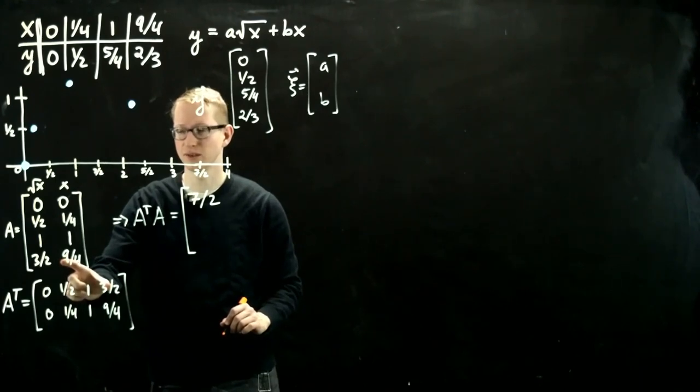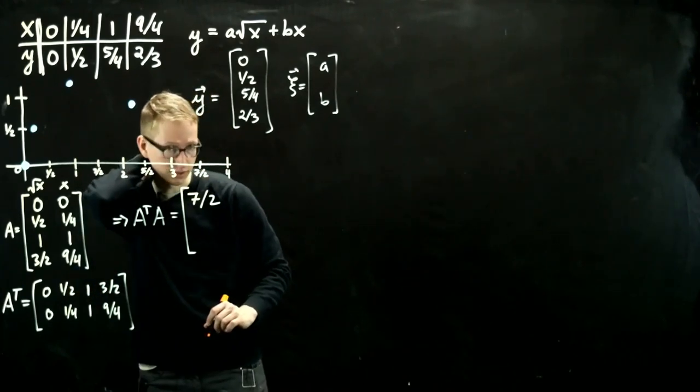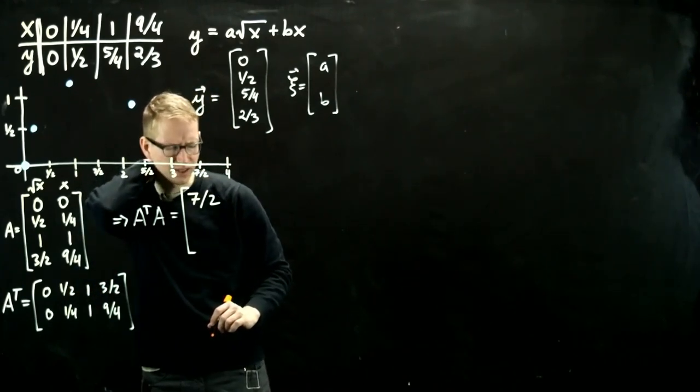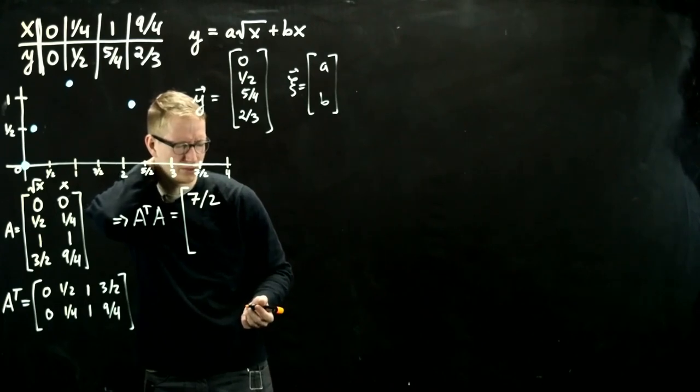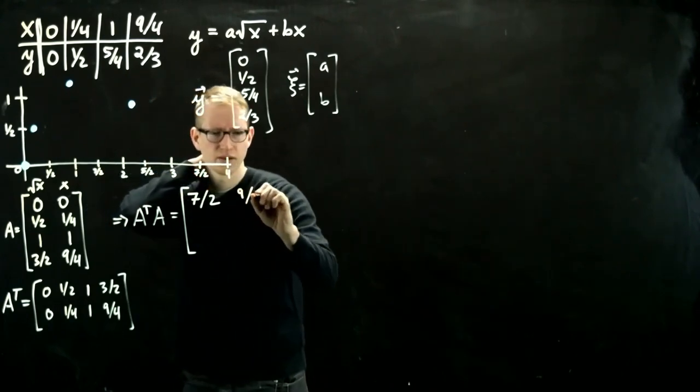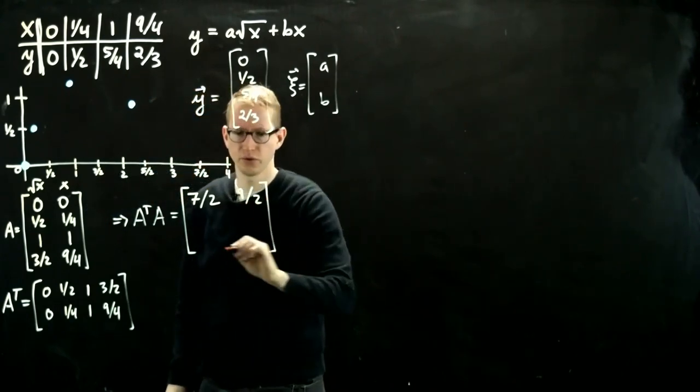So 27 eighths plus 9 eighths gives us 36 eighths. And if we divide that by 4, I think we get 9 halves, the numerator and the denominator.